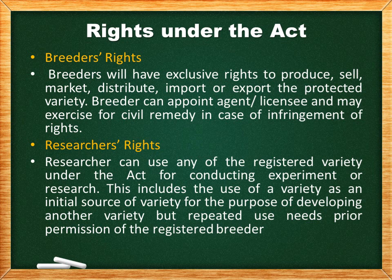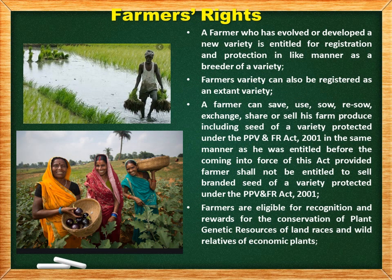The second right is researchers' rights. Researchers can use any of the registered varieties under the act for conducting experiments or research. This includes the use of a variety as an initial source for the purpose of developing another variety, but repeated use requires prior permission of the registered breeder.